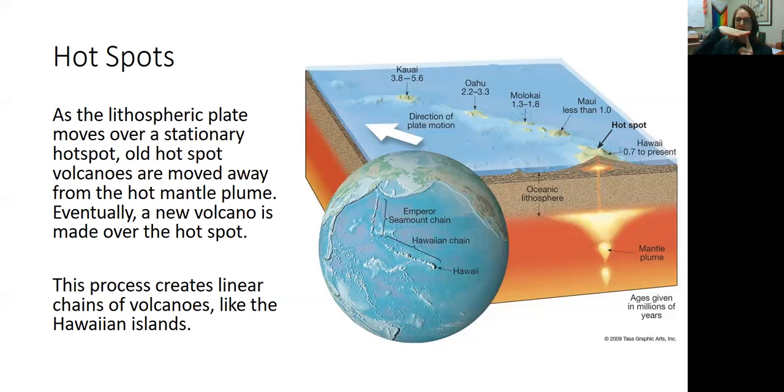The lithosphere, the tectonic plate above it, moves, and this creates a chain of volcanoes as the older volcanoes are moved farther and farther away from the mantle plume.